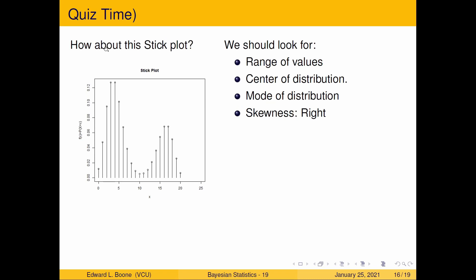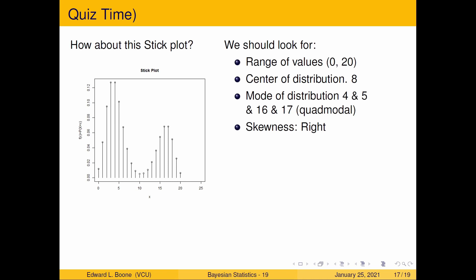So let's do a little quiz. How about this stick plot? What's its range of values? It looks like it goes between 0 and 20. The center — maybe 8 or 9, somewhere in here, because there's a bulk over here and a bulk over there. The mode of the distribution looks like it has four of them — 4, 5, 16, and 17. The skewness is probably right skewed. So: range 0 to 20, center around 8, modes at 4, 5, 16, and 17. I'm going to call this quad-modal because there are four modes, and it's right skewed.